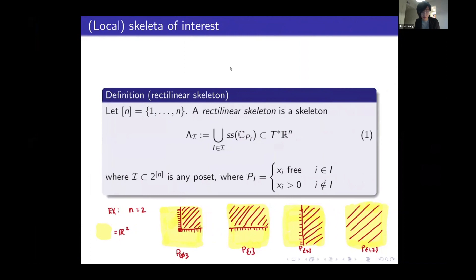We're going to look at a pole set — any pole set in the power set of the set of elements — and we're going to build a skeleton out of it from the singular support of a region. We put a condition requiring the i-th coordinate to be positive for little i not in capital I, for each i in the pole set. The singular support is a Lagrangian, and the union of these gives you a skeleton living in T* of R^n.